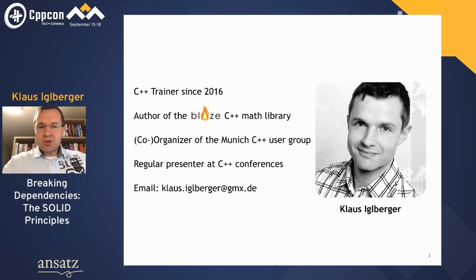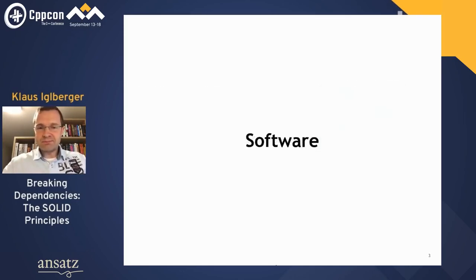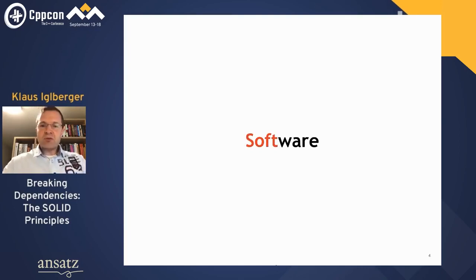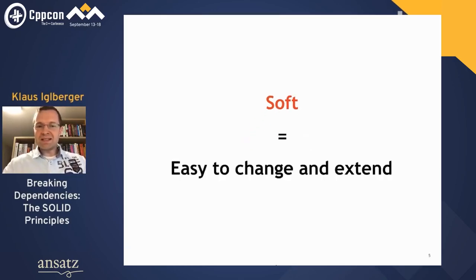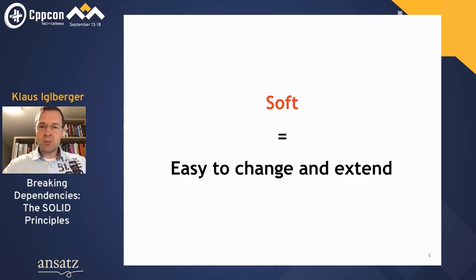Today in this talk, we're talking about software. There is a reason that software is called software, because we have a certain expectation in software. 'Soft' actually means that it's easy to change and easy to extend. That was initially the reason why software was called software in comparison to hardware, which is difficult to change.